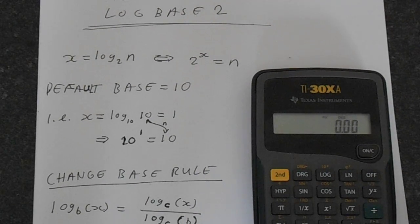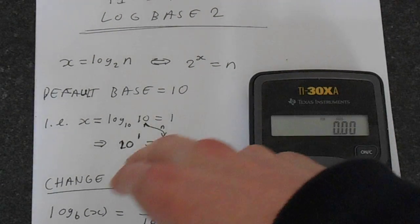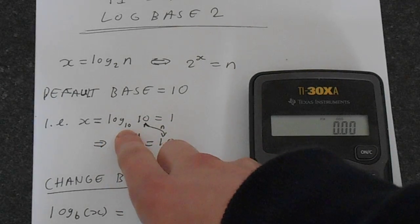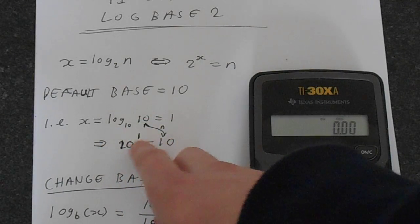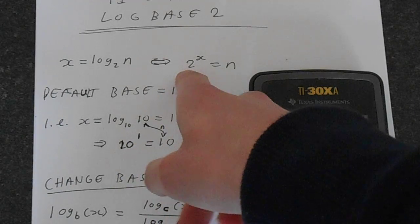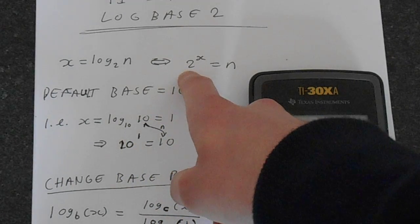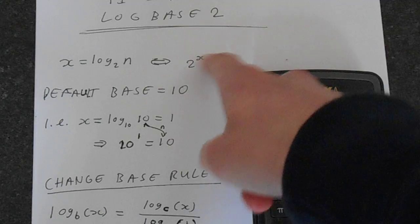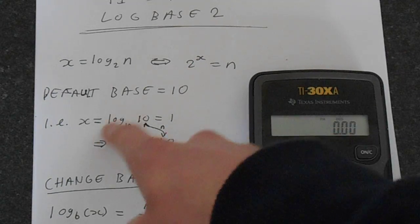The definition becomes obvious when you look at, say we take log 10 of 10, this is obviously 1, because putting this in here, 10 raised to what power equals 10? Well it's obviously 10 to the power of 1, so this will give you what you need.